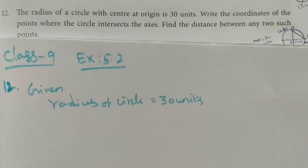Hi students. Class 9 Maths, Exercise 5.2, Question number 12. The radius of the circle with the center at origin is 30 units. Write the coordinates of the point where the circle intersects the axis. Find the distance between any two such points.